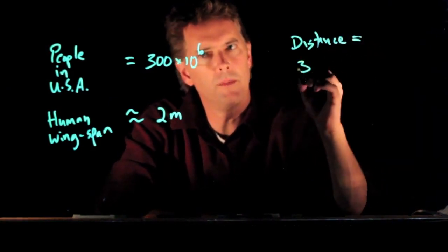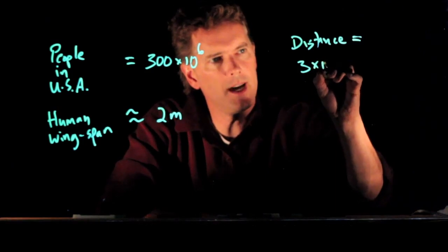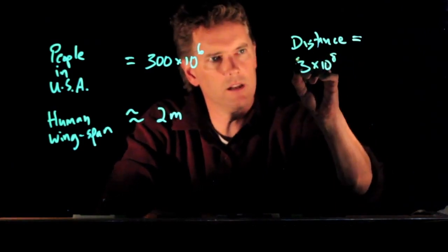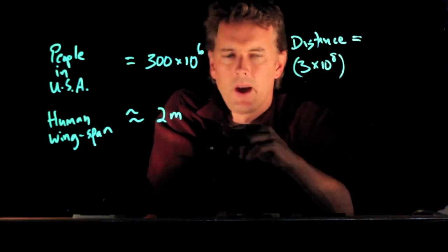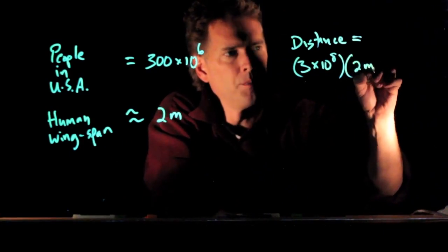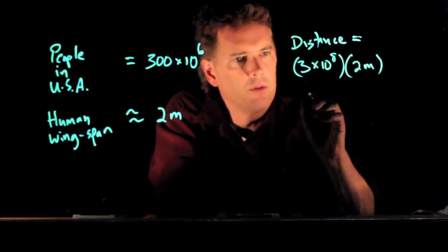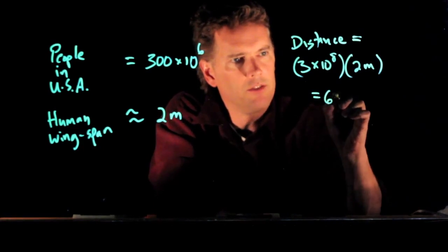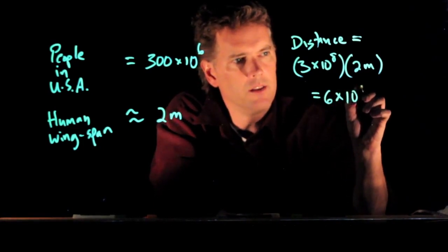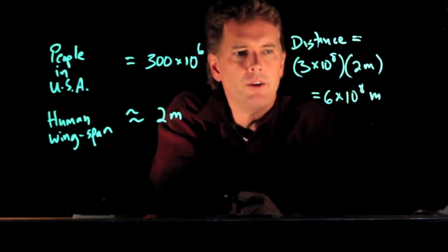...is 300 million, which is three times 10 to the eight. And now we got to multiply by the wingspan, two meters. So what do we get? We get six times 10 to the eight meters.